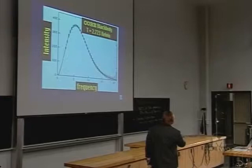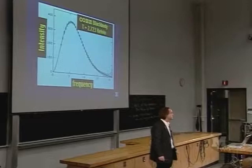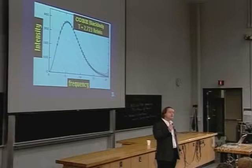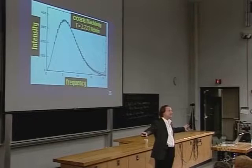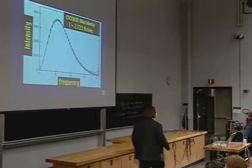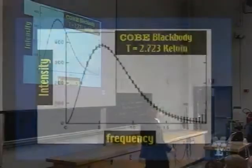A satellite that flew in the late 1980s measured the spectrum of light coming from the background of the universe — called the cosmic microwave background. What they found is that it's precisely in a particular equilibrium form, meaning the radiation had to be produced under equilibrium conditions — which is exactly what the Big Bang gives you, and there's no other way anyone's ever thought of to explain it. This is another cornerstone of the Big Bang theory.